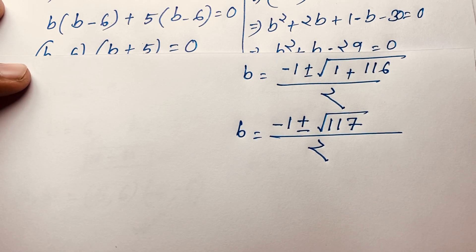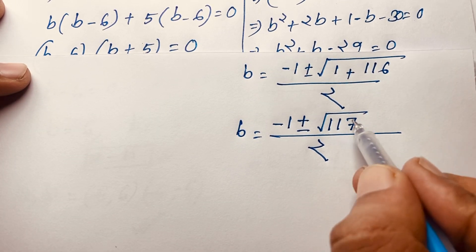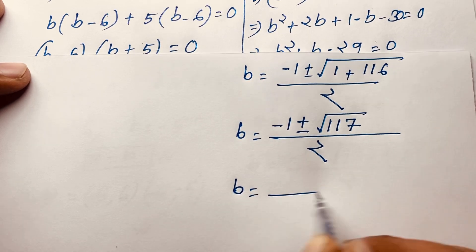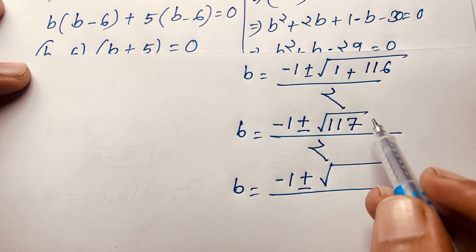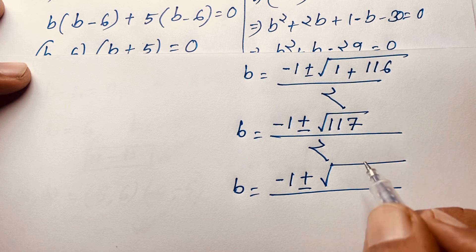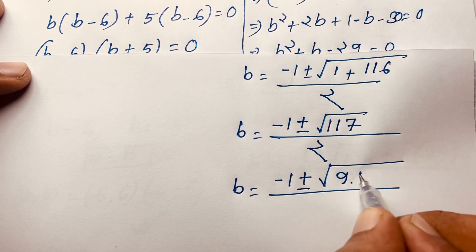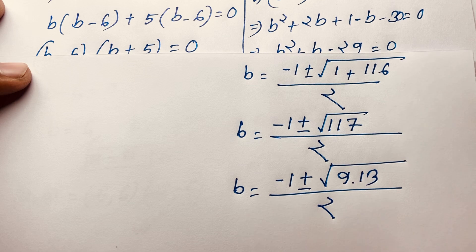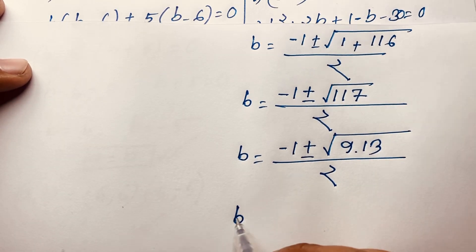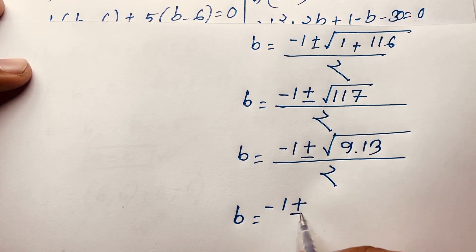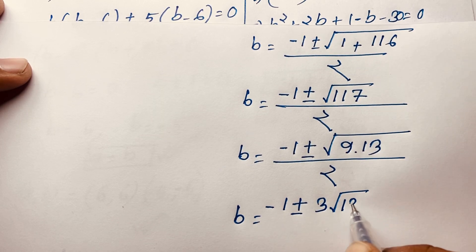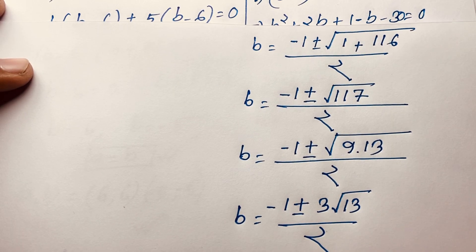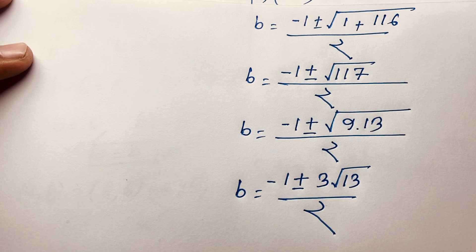Then this is our value of B. If I evaluate this expression, the square root of 117 equals square root of 9 times 13 over 2. So I can say B is equal to negative 1 plus or minus square root 9, which is 3, times square root 13 over 2. So we have found that B is equal to negative 1 plus or minus 3 square root 13 over 2.